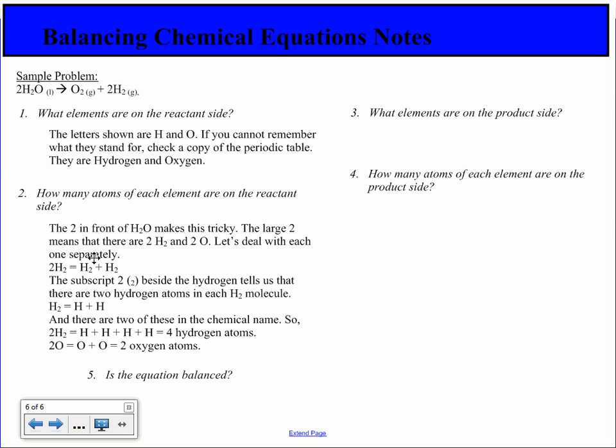2H2 means that I have H2 plus H2. The subscript 2 beside the hydrogen tells us that there are two hydrogen atoms in each H2 molecule. There are two of these in the chemical name, so that means we have four hydrogen atoms. Two Os means there are two oxygen atoms.